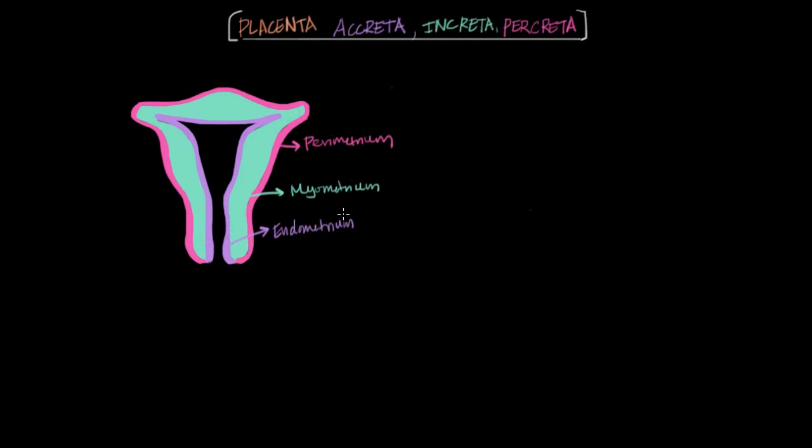And it's the endometrium that's all the way on the inside that actually changes to prepare for the implantation of the embryo. And that process of change that the endometrium undergoes is called decidualization. It's a process where blood vessels grow profusely and glands in the endometrium become filled with nutrients like glycogen. And at the end of this process, at the end of the decidualization, the endometrium is called the decidua.